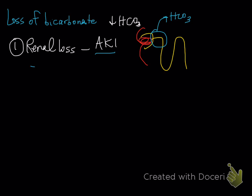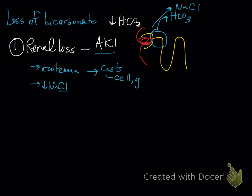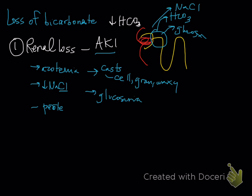What are you going to look for? You're going to look for azotemia. We also know that we lose sodium and chloride with renal loss, so you may see decreases in sodium and chloride, but chloride won't be as decreased. You can look for signs of renal tubular injury — those are casts: cellular casts, granular casts, and waxy casts indicate actual injury. You may see glucosuria with a normal serum glucose, because glucose is reabsorbed in the proximal tubule. You may also see some proteinuria, though that has many causes.